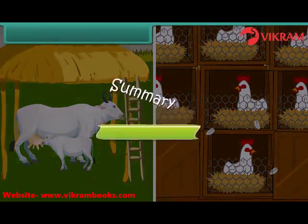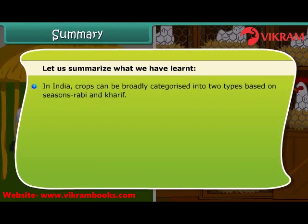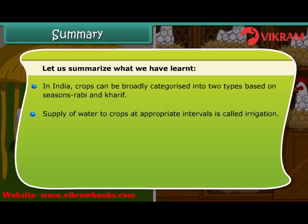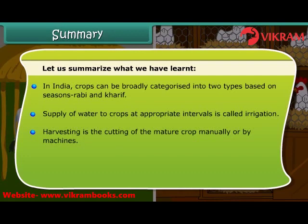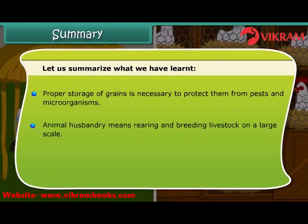Summary. In India, crops can be broadly categorized into two types based on the seasons they are grown in — Rabi and Kharif. Supply of water to crops at appropriate intervals is called irrigation. Harvesting is the cutting of the mature crop manually or by machines. Separation of the grains from the shaft is called threshing. Proper storage of grains is necessary to protect them from pests and microorganisms. Animal husbandry means rearing and breeding livestock on a large scale.